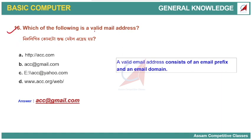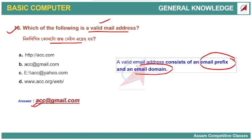Which of the following is a valid email address? A valid email address has two parts: the email prefix on the left side of the @ symbol, and the email domain on the right side of the @ symbol.